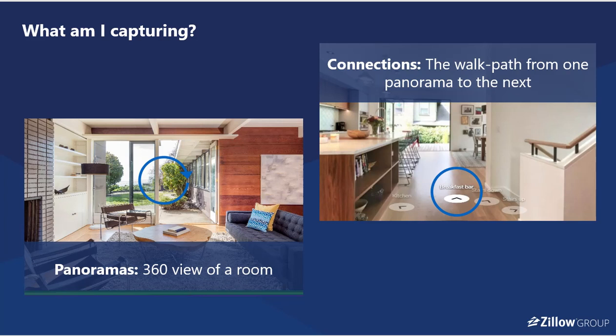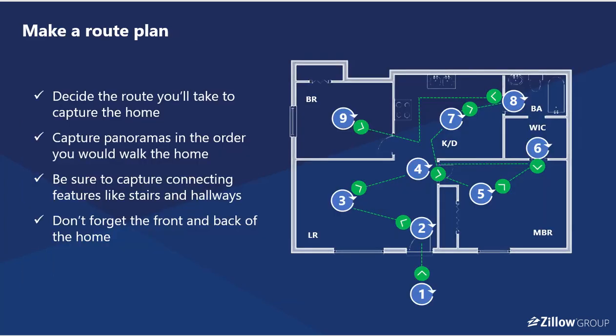How do you think about planning your route? This is pretty simple — you really just want to create a linear path. In areas where you can't create a linear path, make sure that you can walk back the way you came via that connection point, and make sure that you're connecting features like hallways and stairs. And don't forget the front and back of the home — that's pretty important.